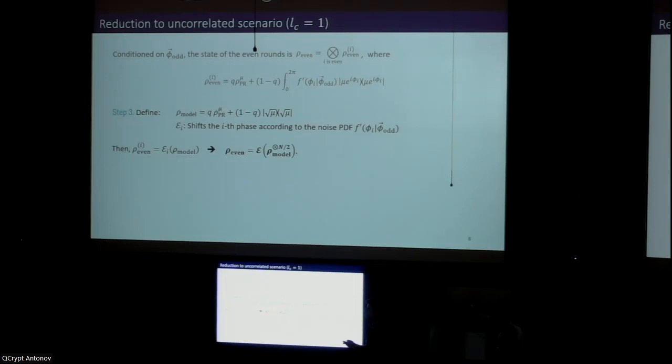The third and last step is to simply define this state ρ_model and to consider an operation that shifts the phase of each even round according to each uncharacterized noise distribution. Then one can easily show that each of these operations turns ρ_model into the appropriate state of each even round. Therefore, the combination of all these operations does exactly what we were trying to achieve.